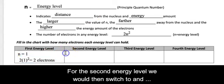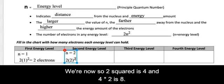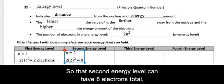For the second energy level, we would then switch to n is equal to 2. I'm going to try to do it this way this time. So 2 times 2 squared now. So 2 squared is 4, and 4 times 2 is 8. So that second energy level can have 8 electrons total. Cool.